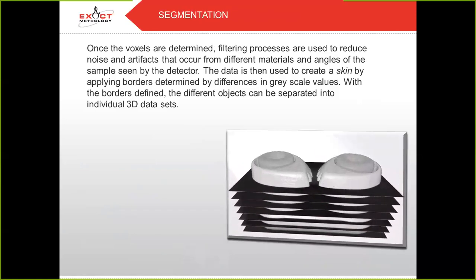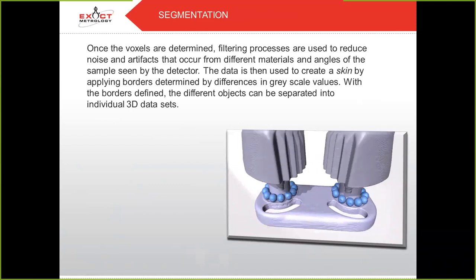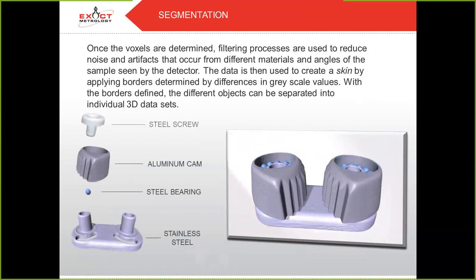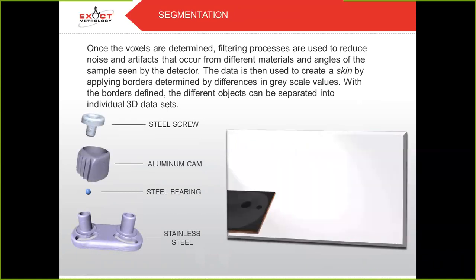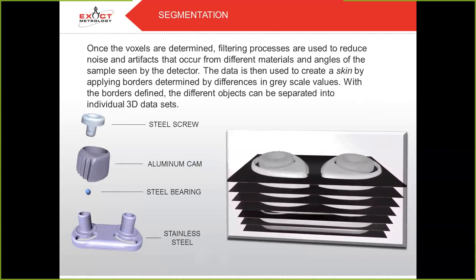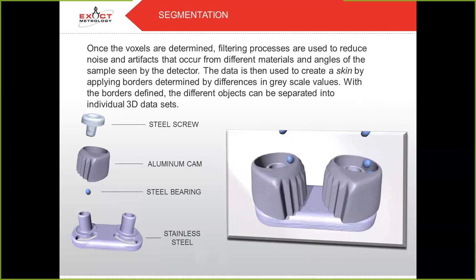On to segmentation. Because each set of components in an assembly are made of different materials, they attenuate differently and therefore produce distinct sets of voxels. Once the voxels are determined, filtering processes are used to reduce noise and artifacts that occur from different materials and angles of the samples seen by the detector. The data is then used to create a surface skin by applying borders determined by differences in grayscale value. With the borders defined, the different objects can be separated into individual 3D datasets.